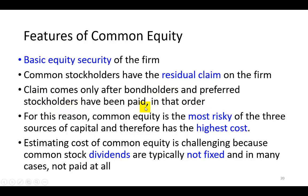So there is a pecking order. And for this reason, common equity is the most risky of the three sources of capital because by the time the money trickles down to them, they might wind up with nothing. Therefore, the cost of common equity capital is really the highest component cost of capital.